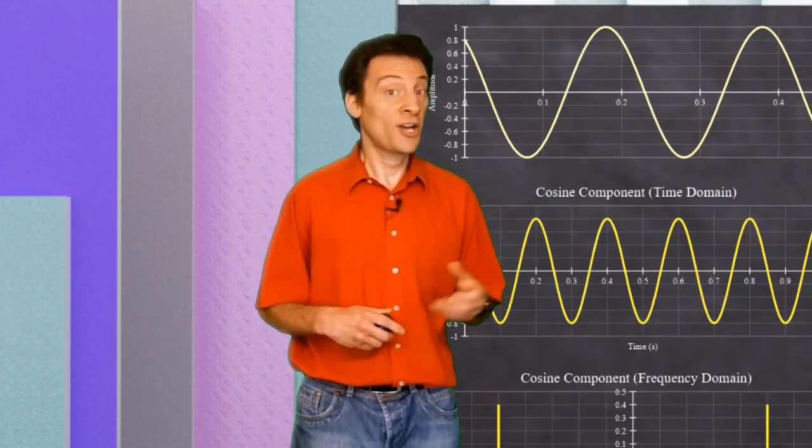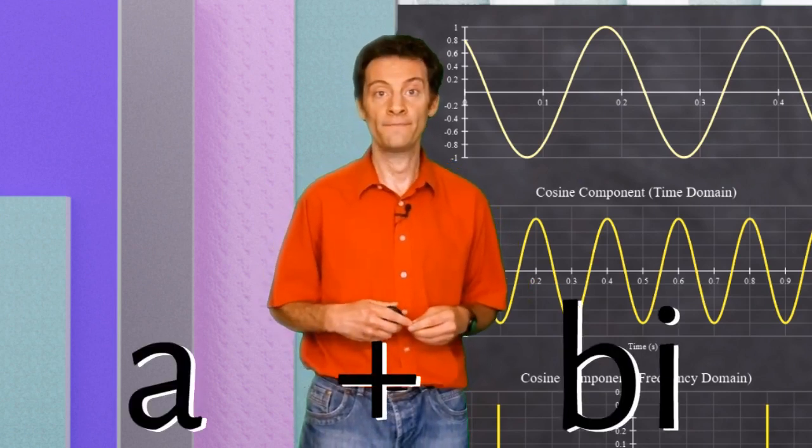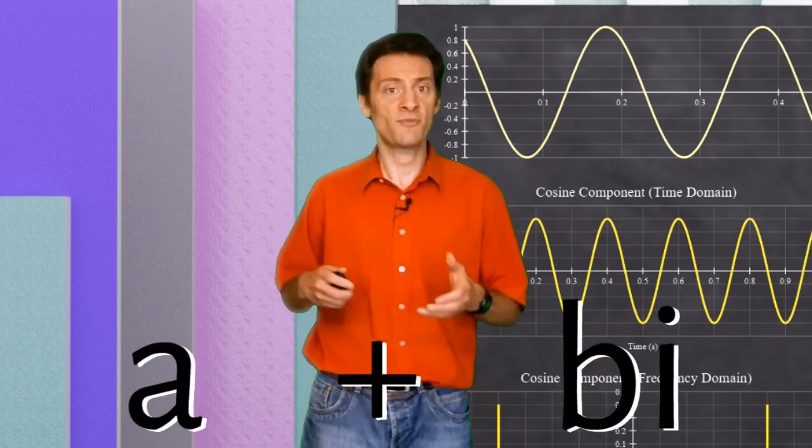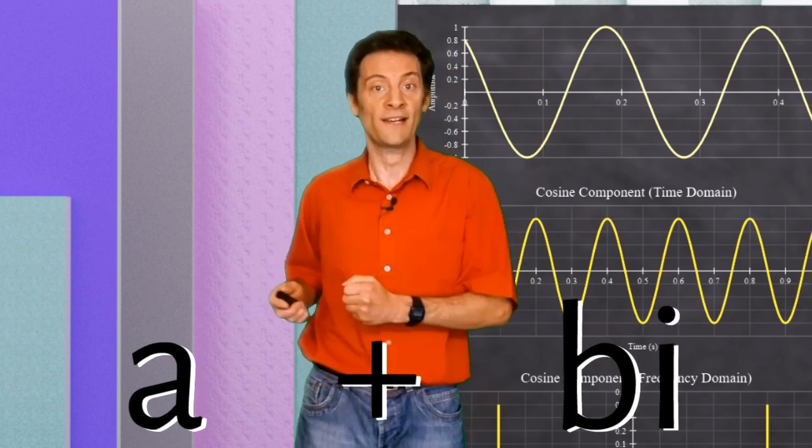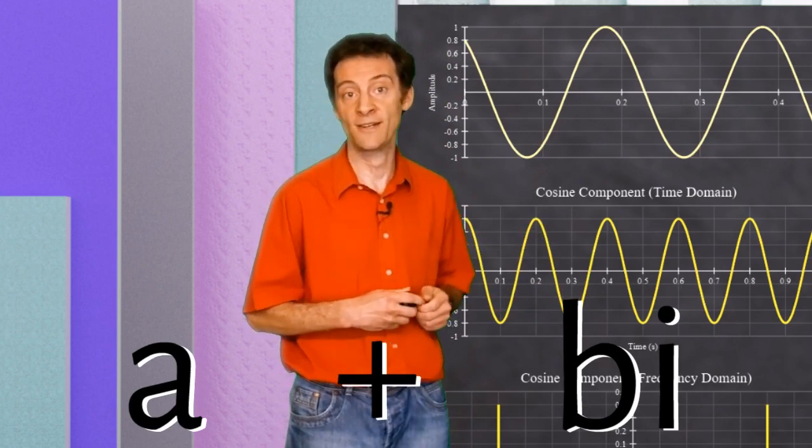In the frequency domain, the cosine and sine components at each frequency are represented by a complex number. The cosine component is represented by the real part of the complex number, and the sine component is represented by the imaginary part of the complex number.